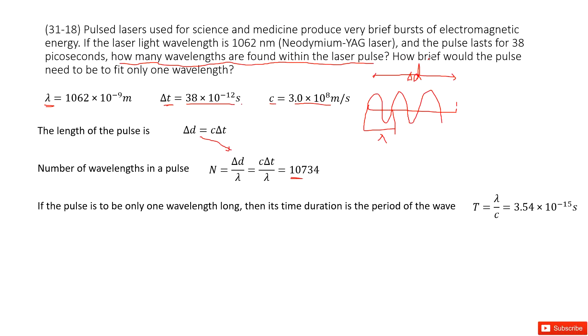Now, how brief would the pulse need to be to fit only one wavelength? Brief means time duration, right? It's the time for a pulse to fit only one wavelength. So in this case, what if the pulse is just one wavelength long?